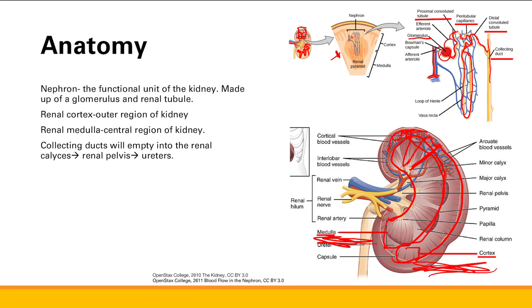The collecting duct will empty into the ureter. It goes through the renal calyces — these structures right here — into the renal pelvis, and then into the ureter, down into the bladder.